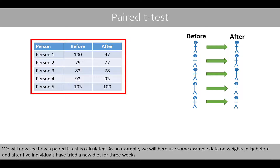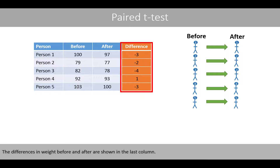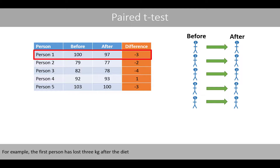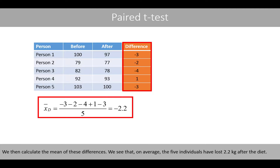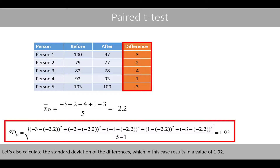We'll now see how a paired t-test is calculated. As an example, we'll use some example data on weights in kilos before and after five individuals have tried a new diet for three weeks. The differences in weight before and after are shown in the last column. For example, the first person has lost three kilos after the diet, whereas the fourth person has gained one kilo. We then calculate the mean of these differences. On average, the five individuals have lost 2.2 kilos after the diet. Let's also calculate the standard deviation of the differences, which in this case results in a value of 1.92.